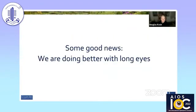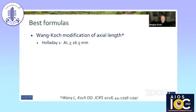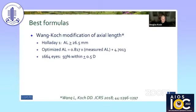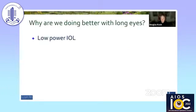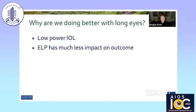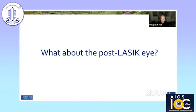Skipping ahead — we are doing much better with long eyes. It started with our Wang-Koch modification, which we found to be very accurate in a study of 1,600 eyes — 93% within a half diopter. We now have other good options: the Hill-RBF3, Barrett, Kane, and Olsen. We're doing better with long eyes because it's a low-power IOL, so if the effective lens position is off, it has much less impact on outcome.